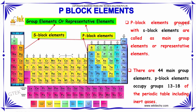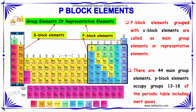P-block elements are grouped with the S-block elements, and they are called the main group elements or representative elements. The S-block and P-block combination together are referred to as the main group or representative elements.